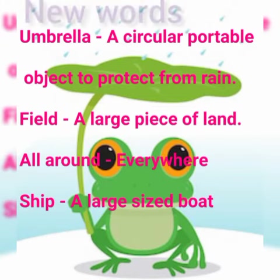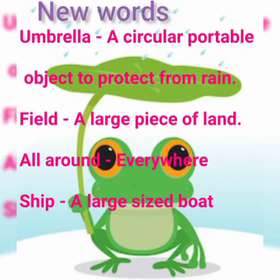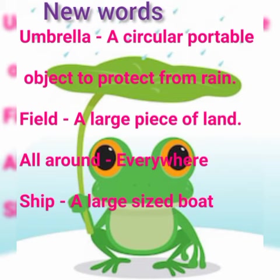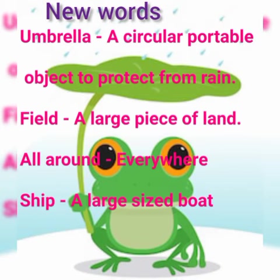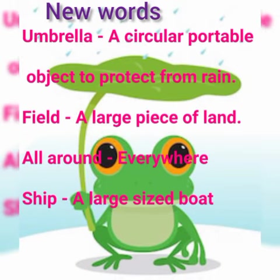Let us know some new words. Umbrella — a circular portable object to protect from rain. Field — a large piece of land. All around — everywhere. Ship — a large sized boat.